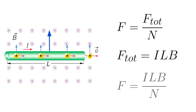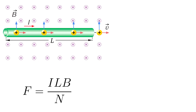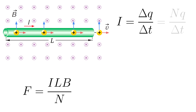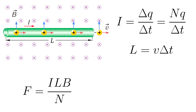By substituting this into the equation, we get ILB over N. Electric current I is the amount of total charge over an interval of time, ΔQ over ΔT. ΔQ is equal to N times q, where q is the charge of each particle. The length of wire L can be found by multiplying the speed of the charge by the time it travels. Substituting all this into the equation for force, we get this expression.